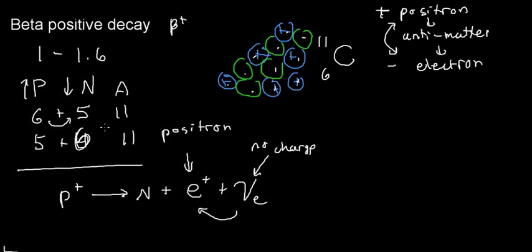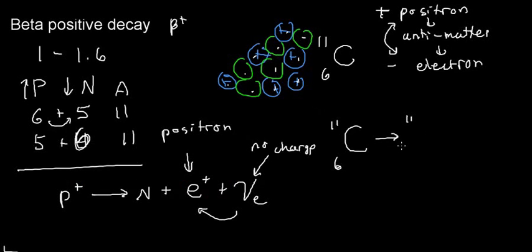Let's see how this occurs for carbon-11. My mass number stays the same. I'm going to lose one proton, so I'll have an atomic number of five — and this element is boron.